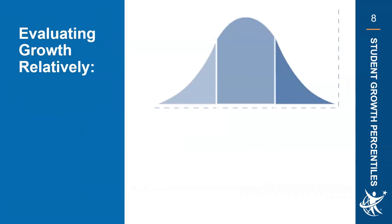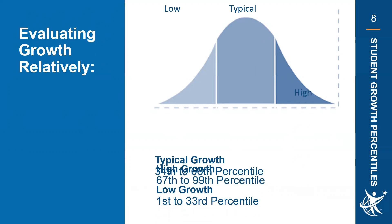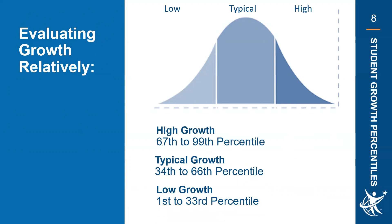Looking at what each student growth percentile means: a student in the 1st to 33rd percentile is considered to have low growth; a student in the 34th to 66th percentile has typical growth; and a student in the 67th to 99th percentile has high growth.